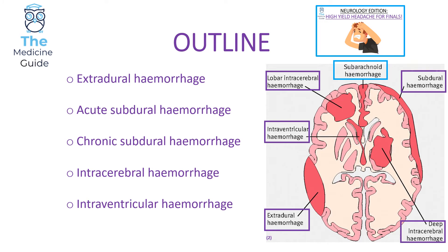In today's video we're going to be looking at the high yield head traumas that crop up in medical school final exams. In particular we're going to be focusing on extradural hemorrhage, acute subdural hemorrhage, chronic subdural hemorrhage, intracerebral hemorrhage and intraventricular hemorrhage. The pathologies enclosed within the purple box on the picture are the ones we'll be discussing. Subarachnoid hemorrhage can arise from trauma as well, but I've previously covered that in my high yield headache for finals video.